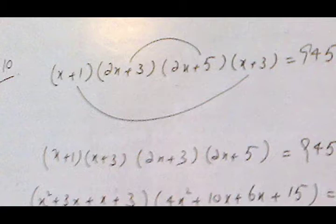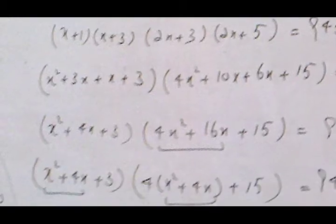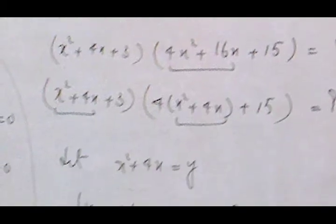We multiply (x+1)(x+3) and (2x+3)(2x+5) using matching coefficient values. This gives x²+4x+3 and 4x²+16x+15. We combine the first two values and let x²+4x equal y. This gives a quadratic equation which we solve by the quadratic formula.